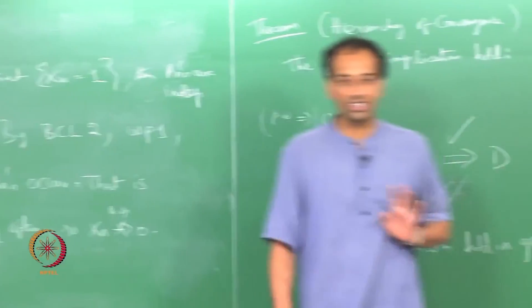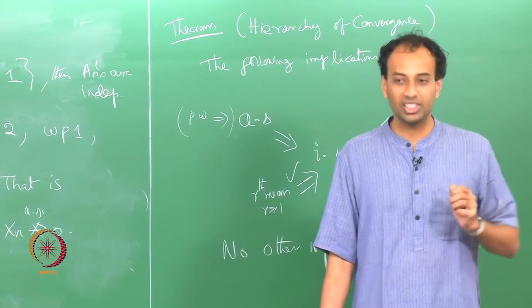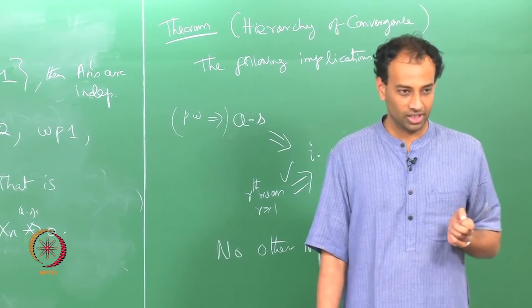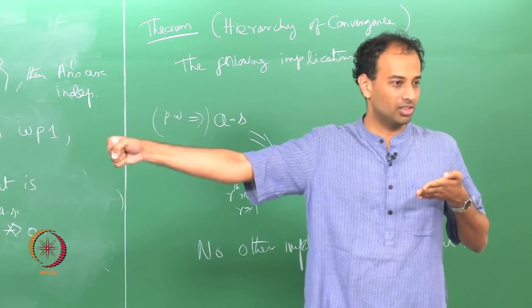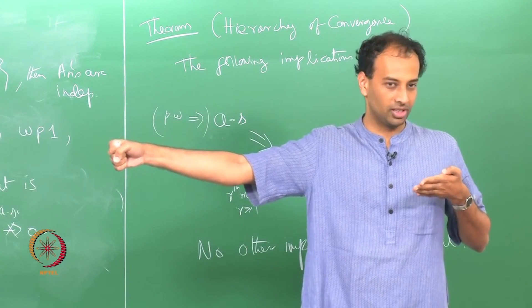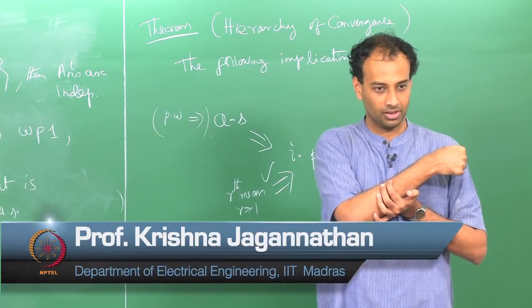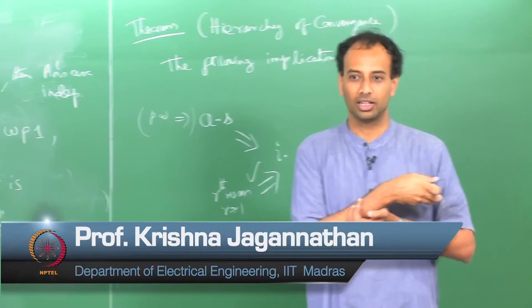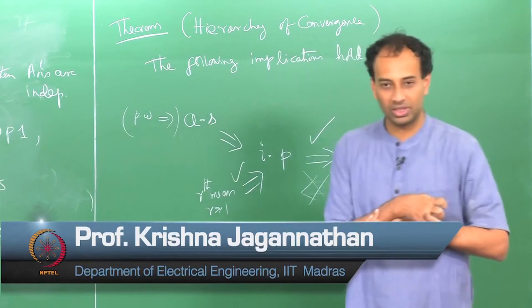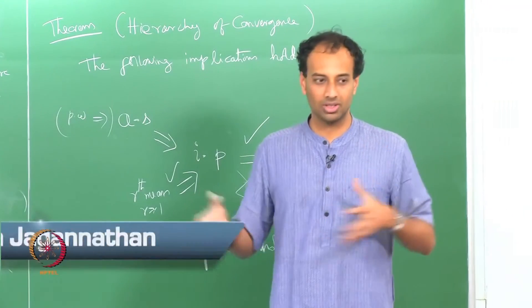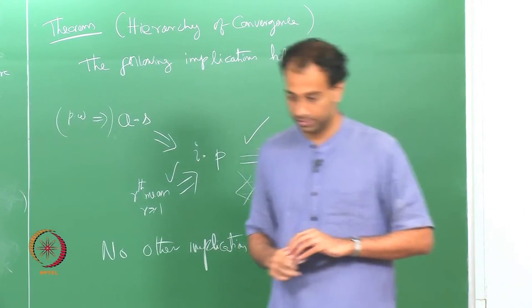This example nicely illustrates the difference between convergence in probability and almost sure convergence. Convergence in probability does not imply almost sure convergence. Next class we will prove the reverse — almost sure convergence implies convergence in probability — via an important theorem that brings out this difference very clearly.